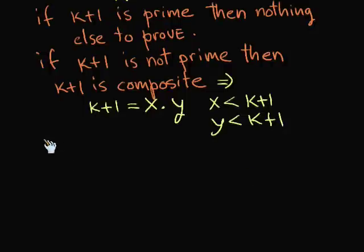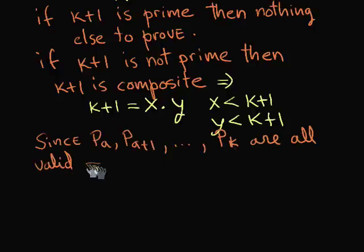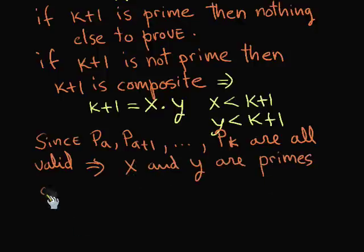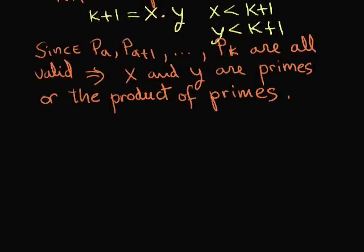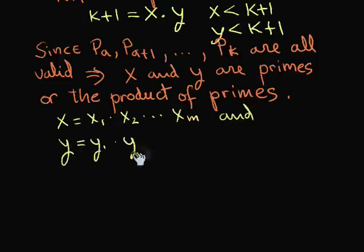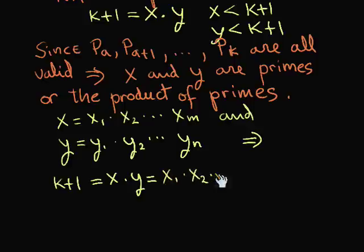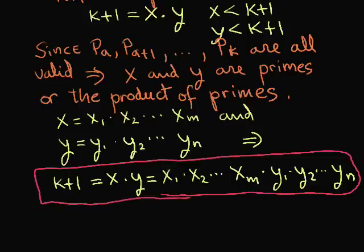Therefore, using our assumption that p sub a, p sub a plus 1, p sub a plus 2, up to p sub k are all valid, this means that x and y are each either prime or the product of primes. So x can be represented as a product of x sub 1 up to x sub m, and y can be represented as a product of y sub 1 up to y sub n. Therefore, k plus 1 equals x times y equals x sub 1 up to x sub m times y sub 1 up to y sub n. That means k plus 1 is a product of primes, and therefore p sub k plus 1 is true.